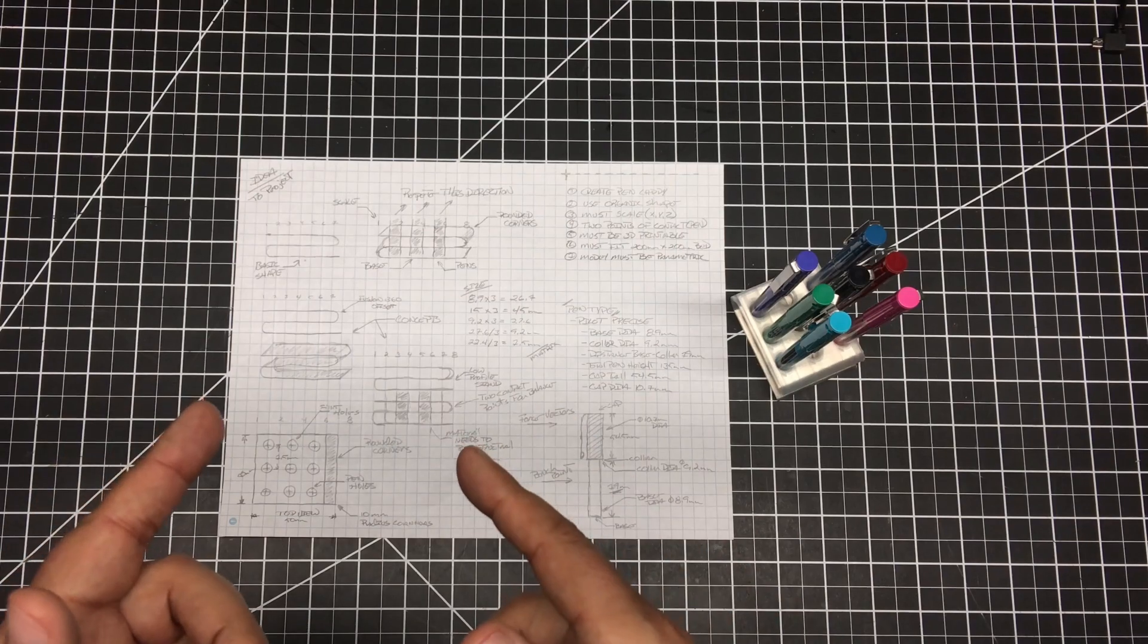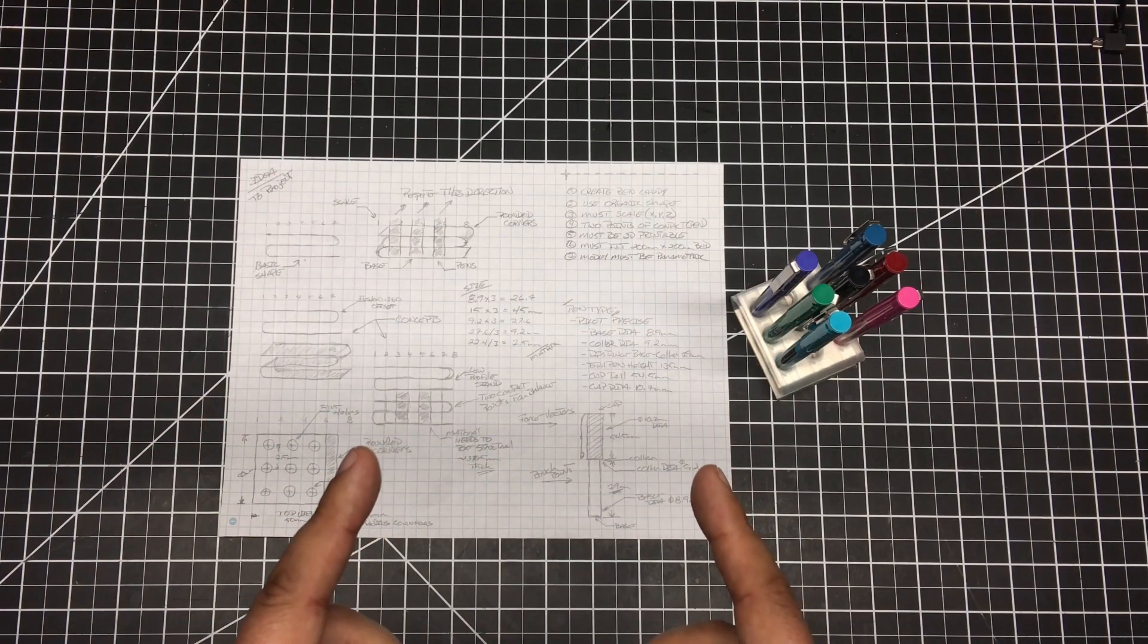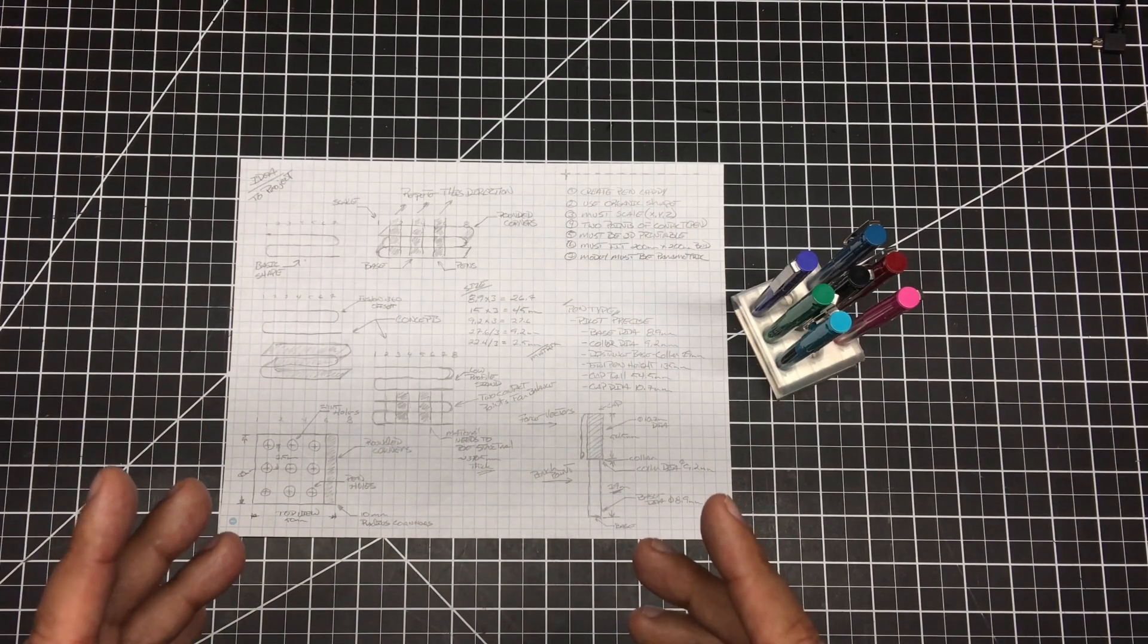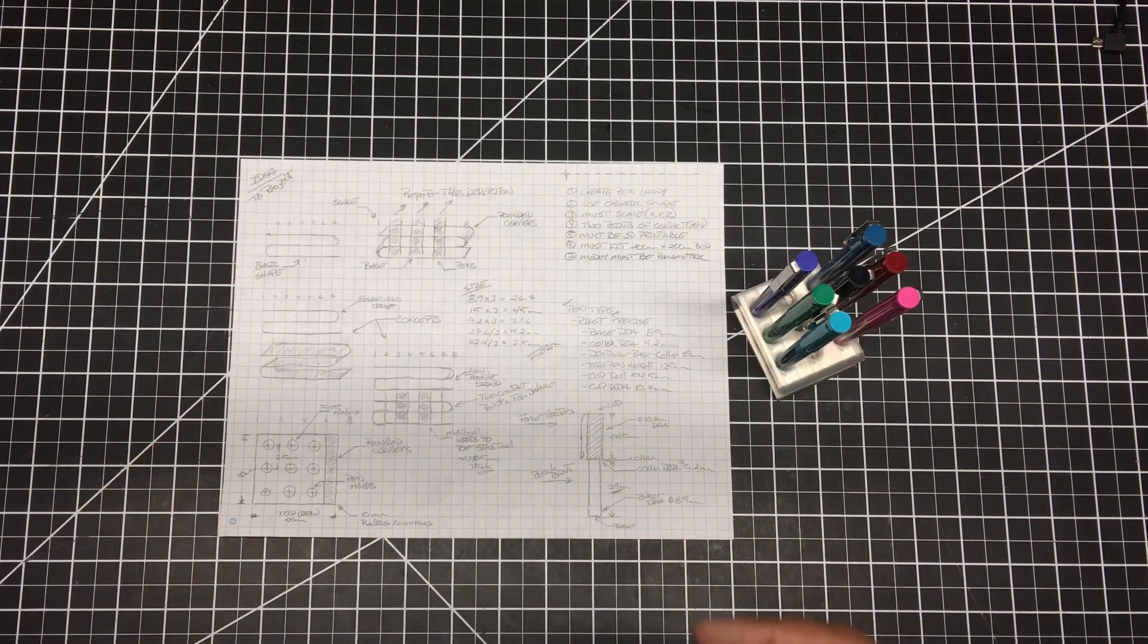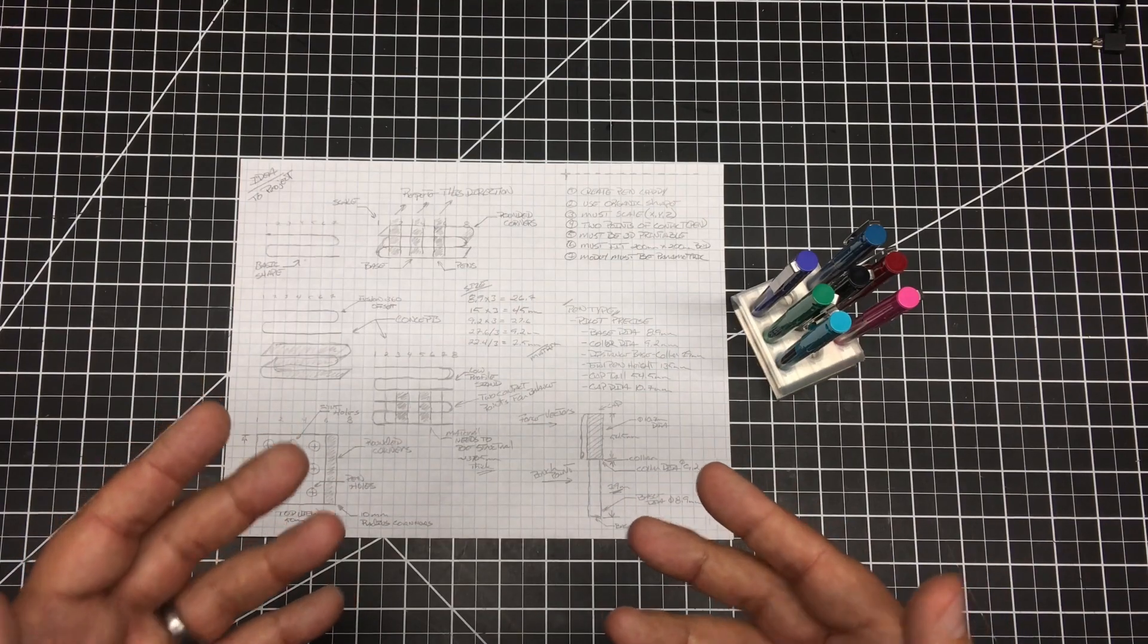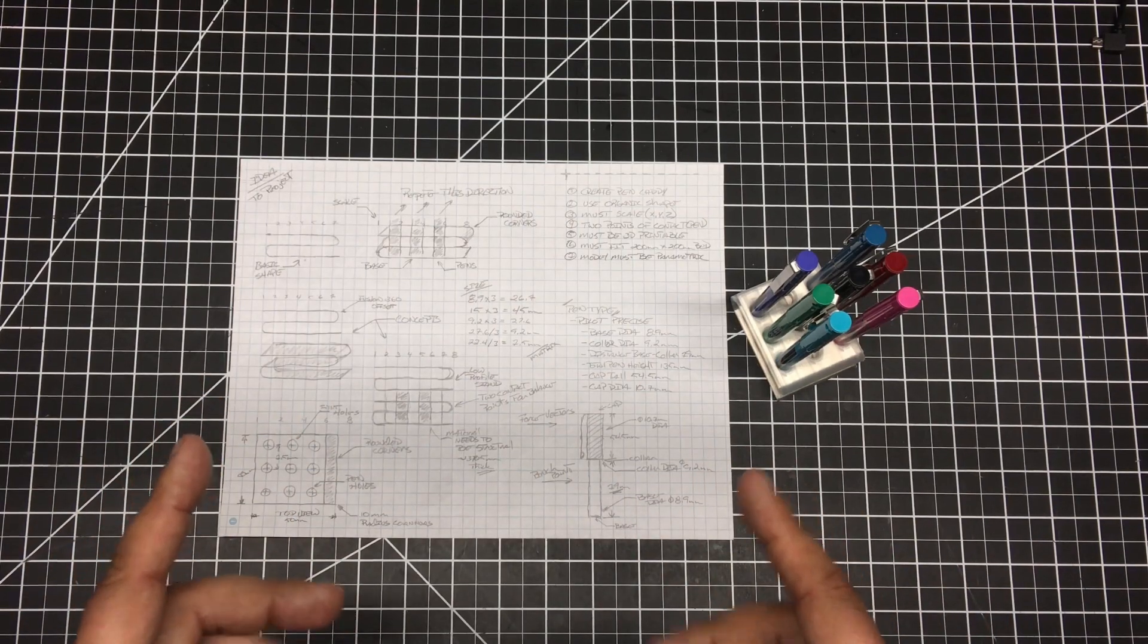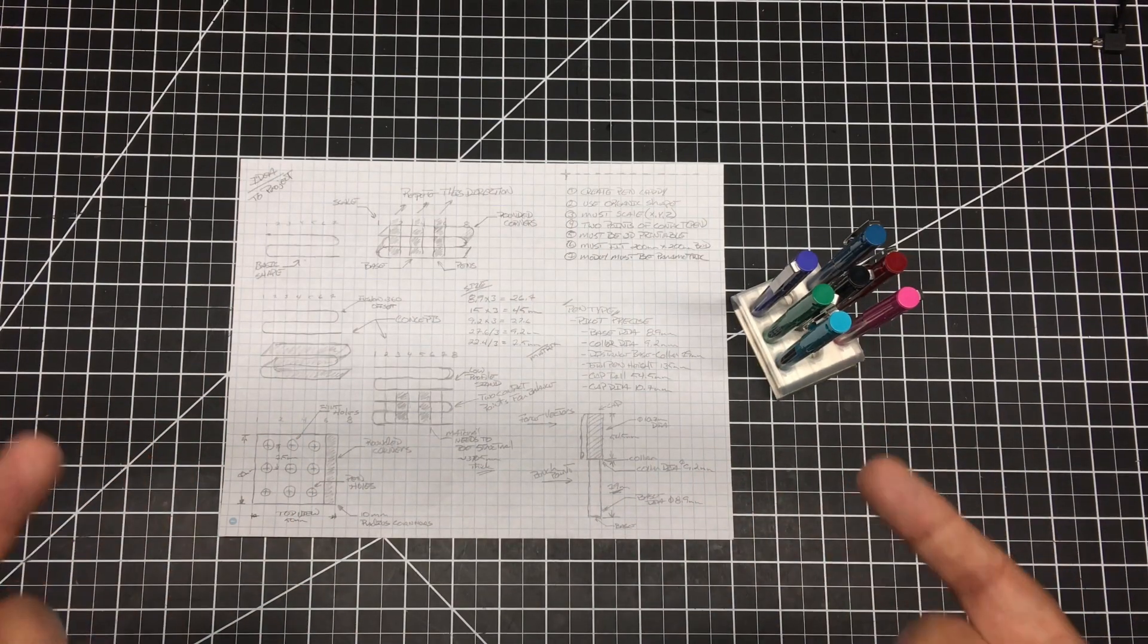Now, what I did is I took this organic shape and I jumped into Fusion 360. Once I jumped into Fusion 360, I used lines and arcs to lay this out. And then I hit the offset command. Now, something unexpected happened. And this is my first tip, is unexpected is good or can be good.